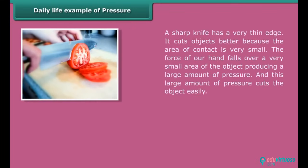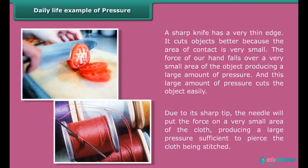A sharp knife has a very thin edge. It cuts objects better because the area of contact is very small. The force of our hand falls over a very small area of the object, producing a large amount of pressure, and this large amount of pressure cuts the object easily. Due to its sharp tip, the needle will put the force on a very small area of the cloth, producing a large pressure sufficient to pierce the cloth being stitched.